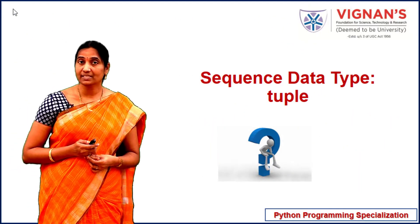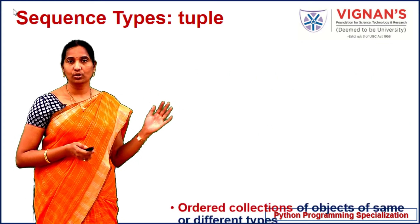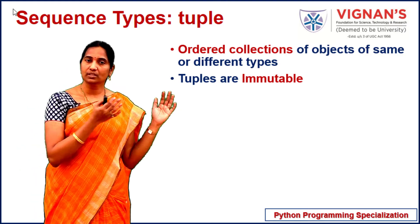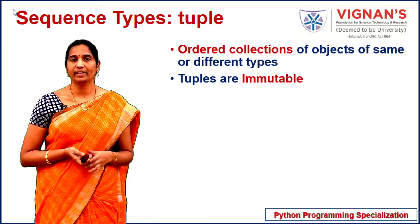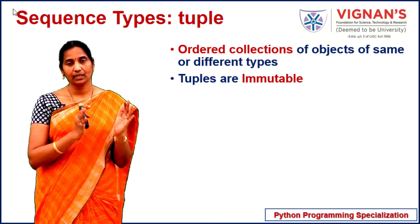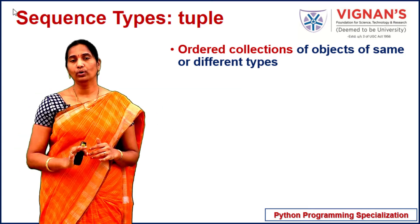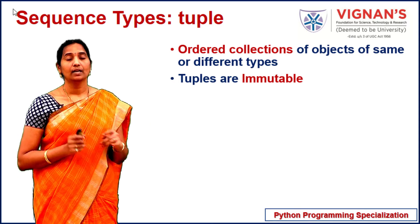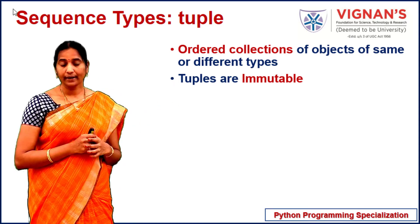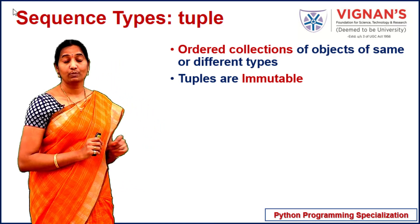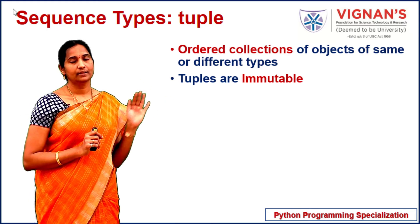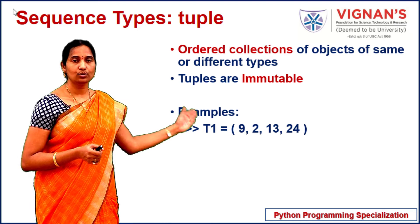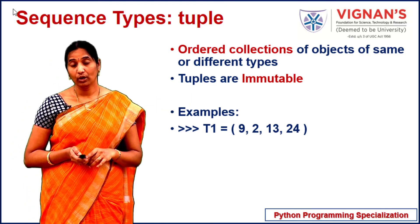Now let's see another immutable sequence data type supported by Python: tuple. Tuple is also an ordered collection of objects where you can store elements of the same type (homogeneous) or different types (heterogeneous). The key difference between list and tuple is that lists are mutable whereas tuples are immutable — you are not allowed to change the values of a tuple once it is created. For example, t1 is a tuple with integer elements 9, 2, 13, and 24. t2 is a tuple with heterogeneous elements including strings, integers, and a floating point number.